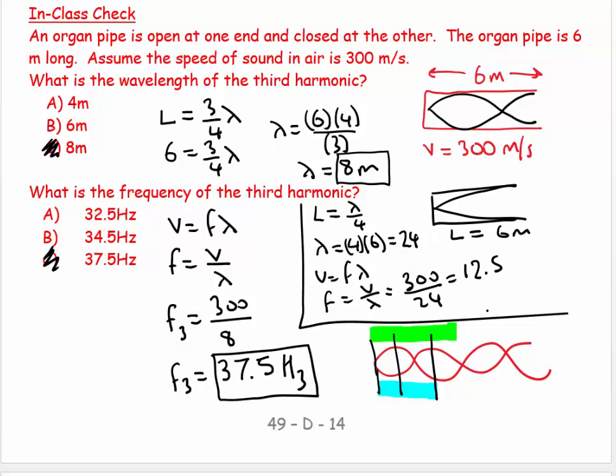And so my third harmonic F3 would equal 12.5 times 3, which equals 37.5 hertz.